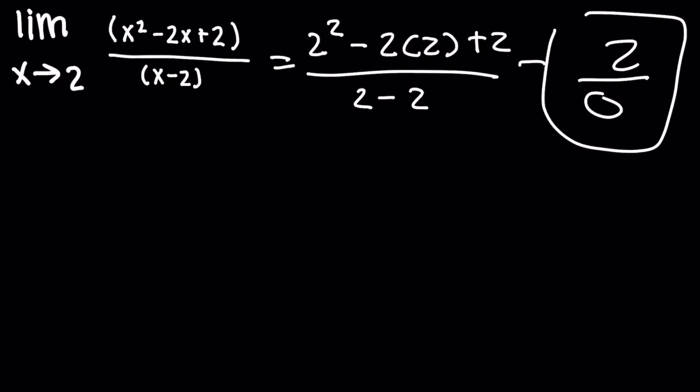This is a common mistake students make when solving limits by factoring. You need to always plug in the number first. Whenever you're solving any limit, always try direct substitution before you try to manipulate it, because if you tried to manipulate this problem you would have gotten stuck. But by plugging in first, you can get the answer right away.